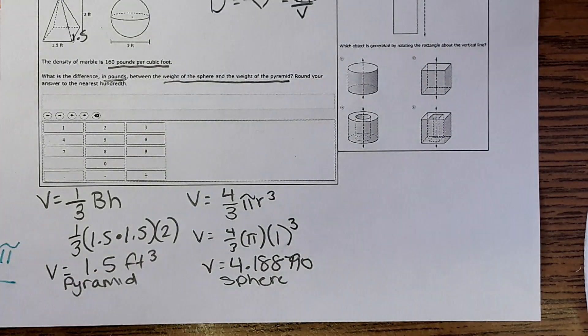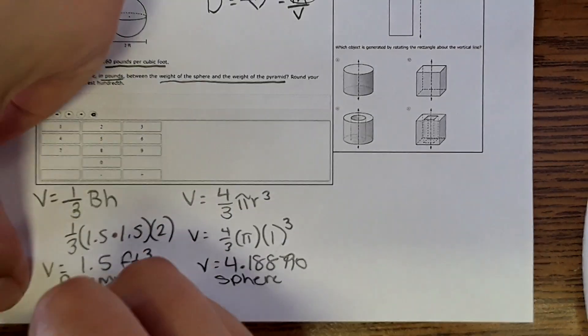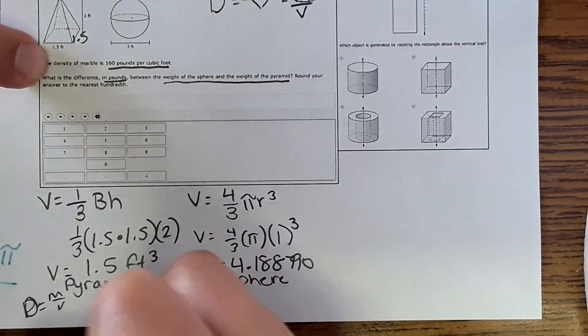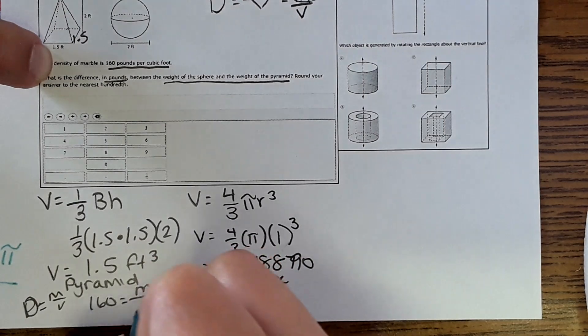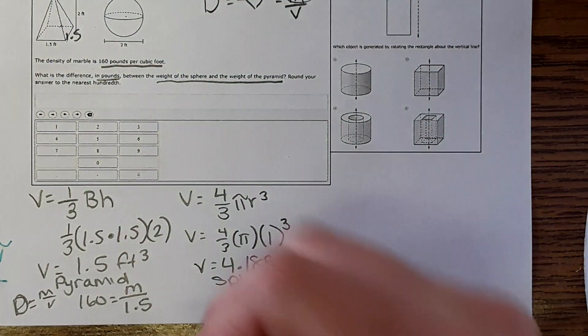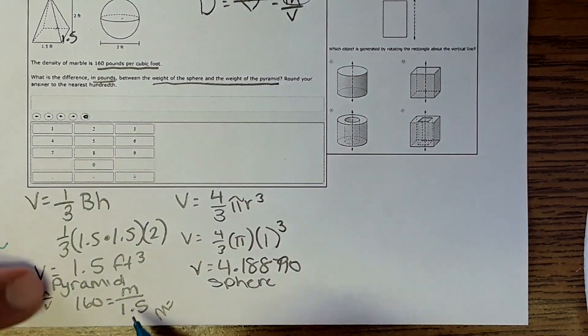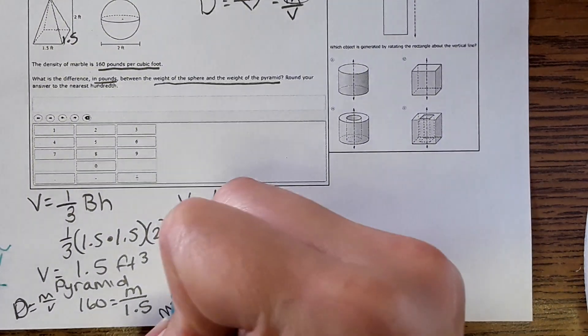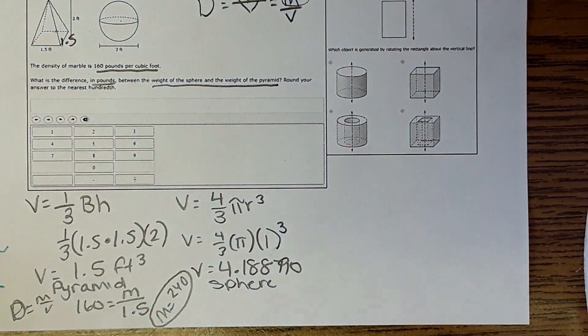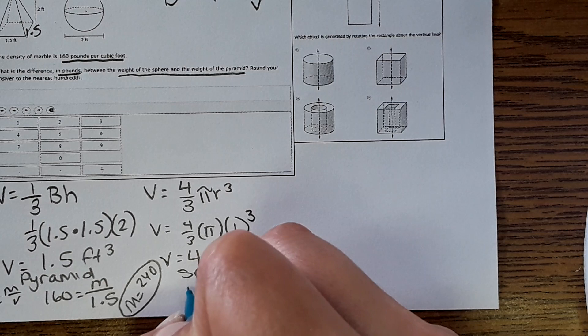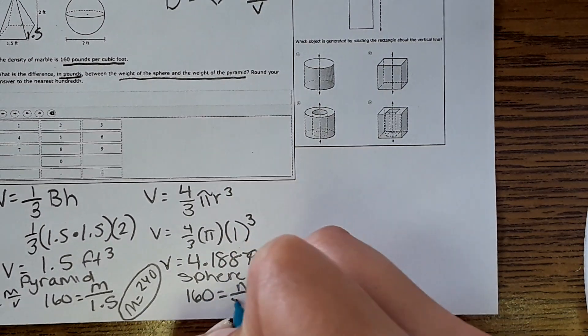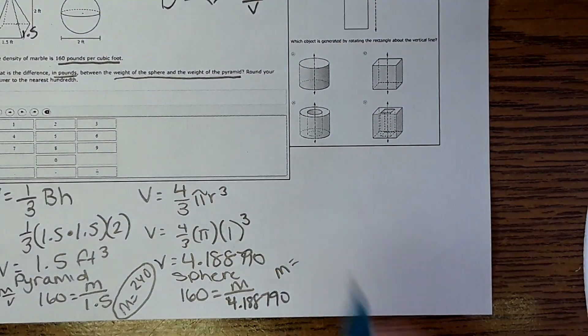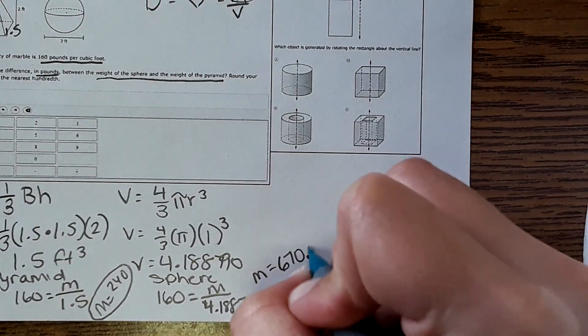The question asked for the difference in mass, not difference in volume, so we have to use density equals mass over volume. The density of this, because it's in marble, is 160. Mass over 1.5. Mass equals, so multiply both sides by 1.5, and it comes out to a mass of 240. And then for the sphere, 160 is the density, mass over 4.188790, and it comes out to a mass of 670.2064.